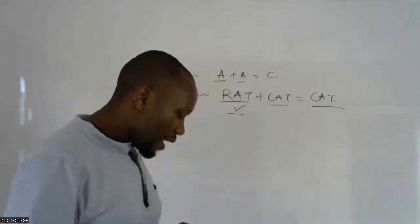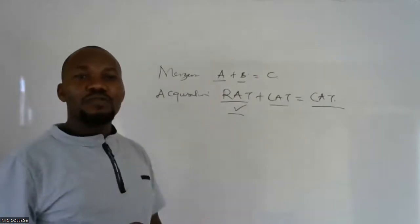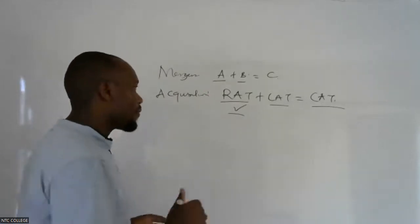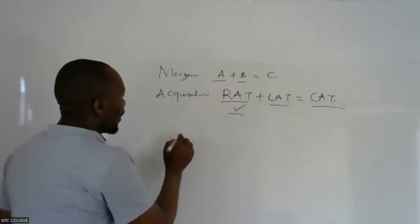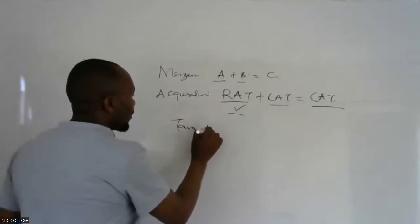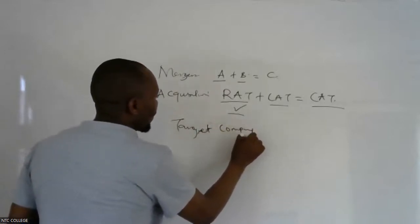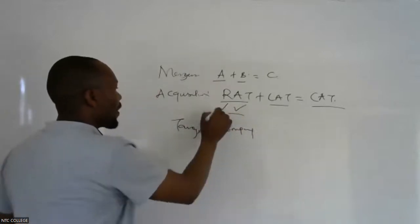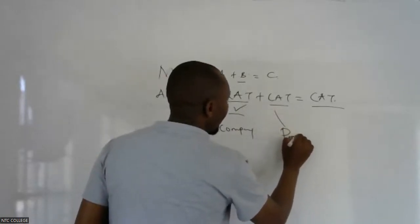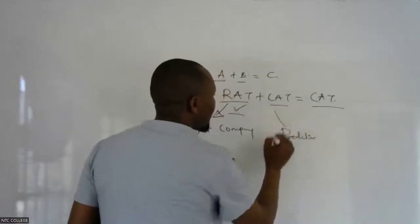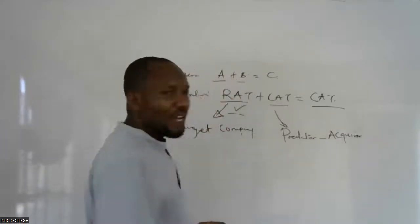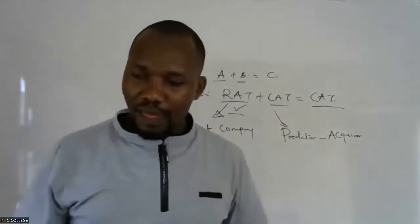In this topic, you need to understand the concept of acquisition. We also have the concept of the target company — that is the one being acquired, the one that is taken over. In our example, it is the rat. And then we have another concept called the predator, which is the acquirer — the one that is taking over the other company.